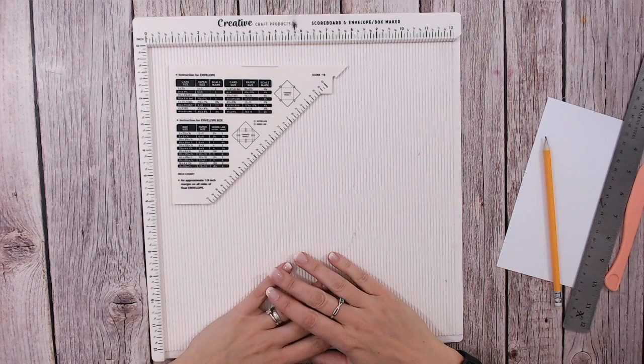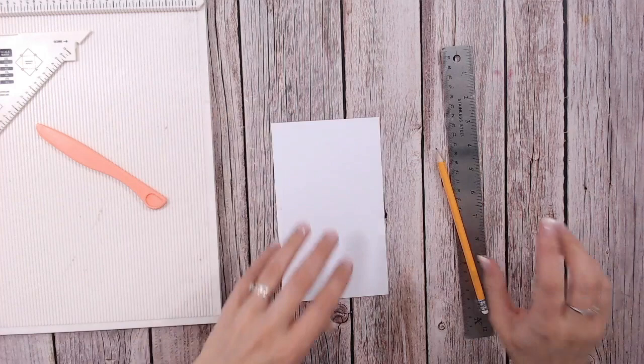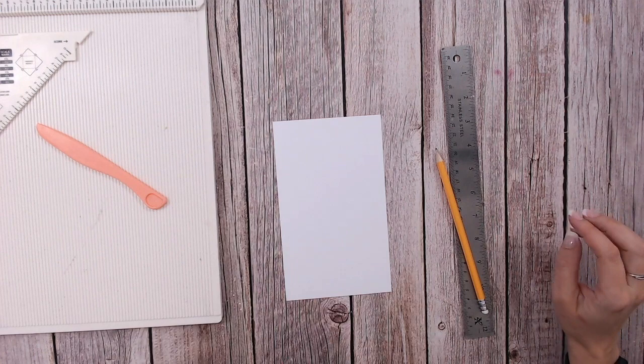You're also going to need a pencil and a ruler, obviously your scoring tool as well, and you're going to need some cardstock. Now I would say go with a really heavyweight cardstock and that way you don't risk accidentally tearing through the paper. So have a look at your scoreboard and work out your measurements.